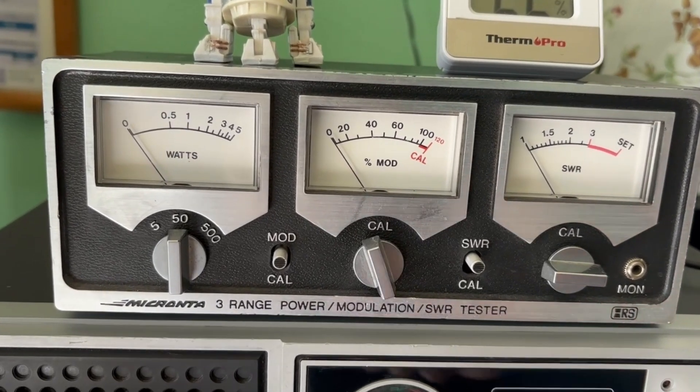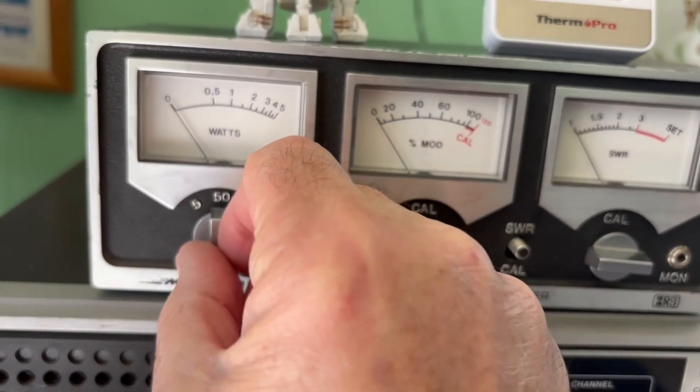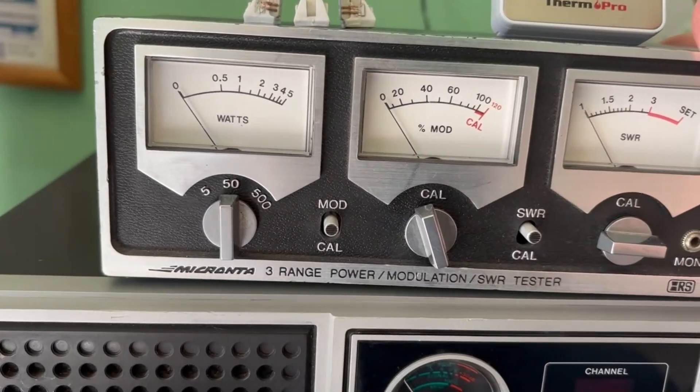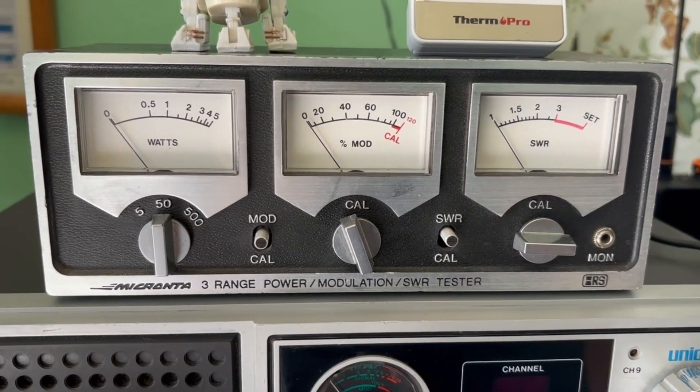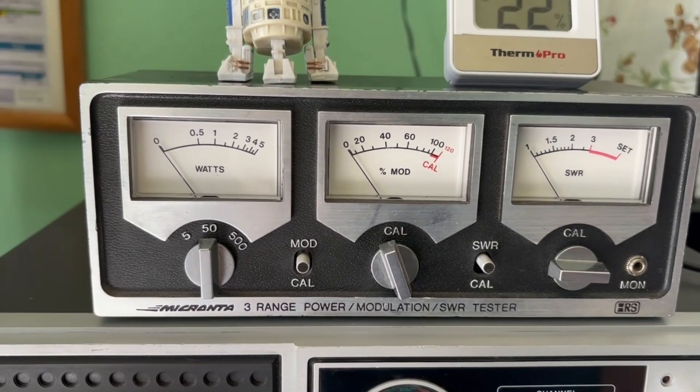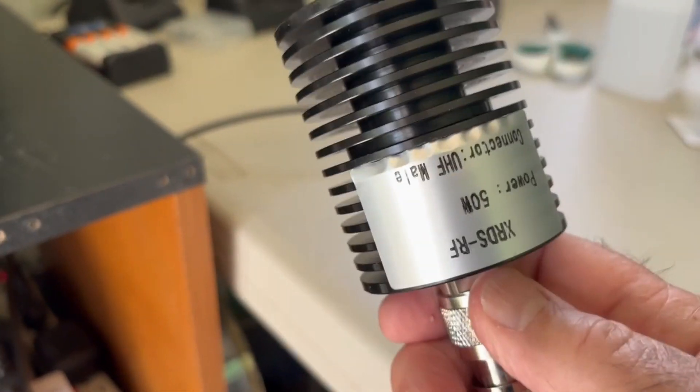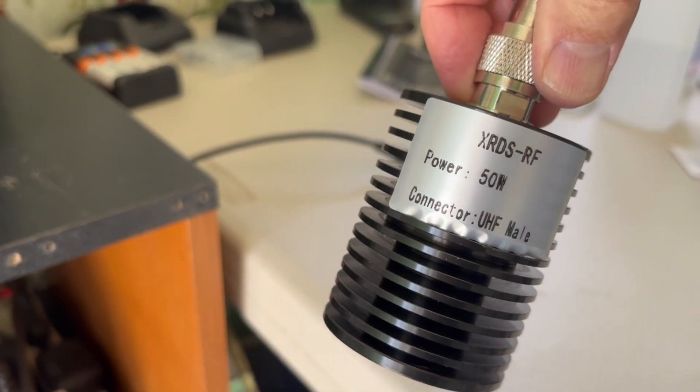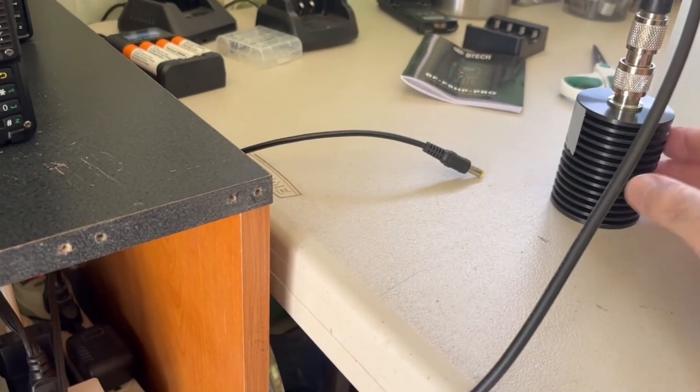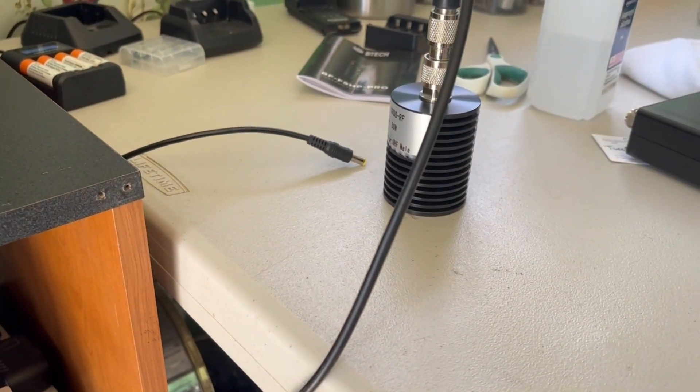We're going to be looking at the watt output here on this particular meter. You can switch it between 50 and 500 watt scale. And over here we have a dummy load hooked up to the end of the antenna that comes out of the radio. It's rated for 50 watts but I'm pretty confident it can take short bursts of probably up to a hundred watts or so.